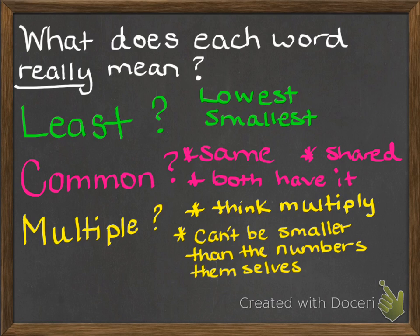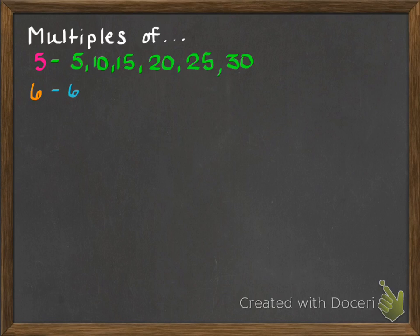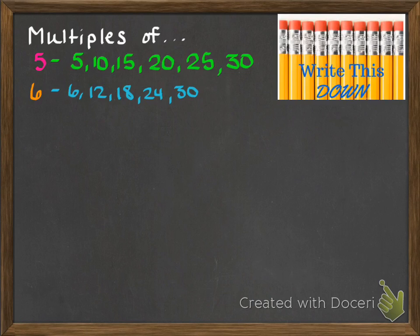On your first page titled 'least common multiple,' I need you to really focus on the multiple part. Write 'multiple,' and remember: when you're looking for a multiple, it's got to be the same as or bigger than both of your numbers. So write that down. Here we have the number 5 — the multiples of 5 are 5, 10, 15, 20, 25, and 30. Now the multiples of 6 are 6, 12, 18, 24, and 30. Go ahead and write these two examples down in your notebook just under where you wrote 'multiples.'